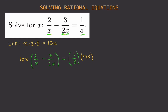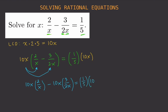We distribute 10x across the left side. That gives us 10x times 2/x minus 10x times 3/2x equals 1/5 times 10x. We can cancel out x in the first term, leaving 20. In the second term we cancel x, giving 10 times 3 equals 30, divided by 2 equals 15.